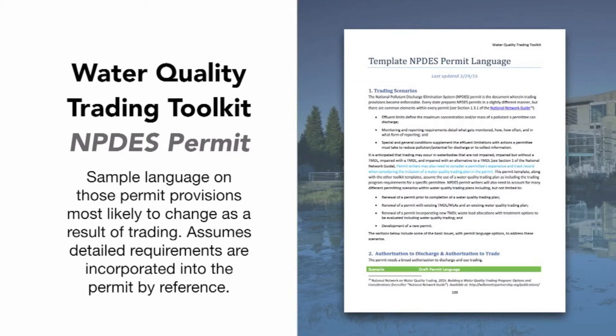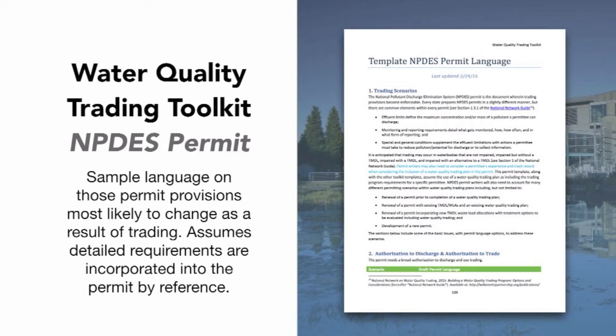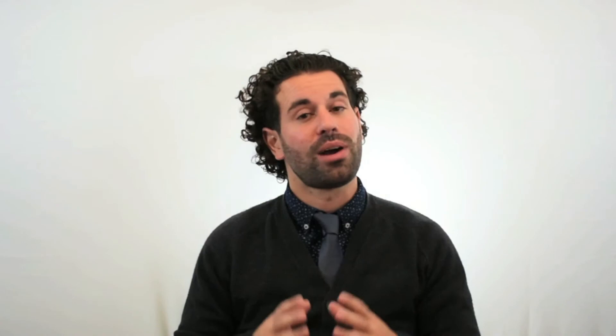The NPDES Permit Template provides ideas for states on how to incorporate trading into permits. It provides sample language on permit provisions most likely to change as a result of trading. In these templates, authors assume the majority of the detailed trading program requirements are housed in a watershed trading framework or a trading plan that is incorporated into the permit by reference. The annual report template is designed for permittees to report on progress under their permit and on individual credit generating projects.